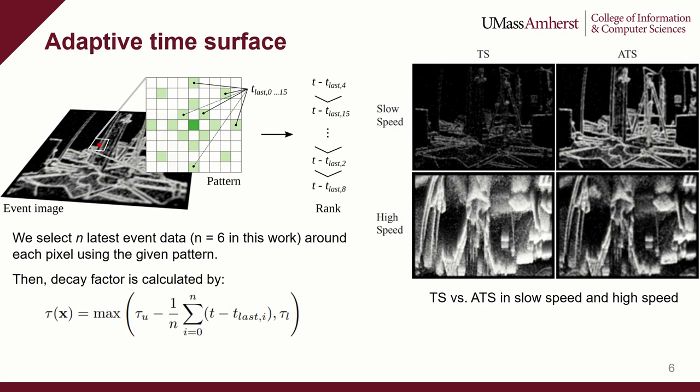We introduced an adaptive time surface to represent event data. The primary goal is to adjust the time surface decay factor adaptively based on the timestamps of the last triggered event in adjacent pixels. To achieve this, we utilize a pattern to select 16 adjacent pixels for every pixel, sort them by their timestamps, and select the 6 most recent pixels. The decay factor for every pixel is then calculated based on this equation. As shown in the right-side figure, the adaptive time surface can store event data for longer time in slow motions and represent event data more clearly in high-speed motions.